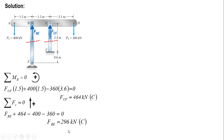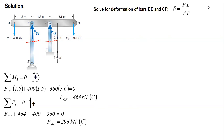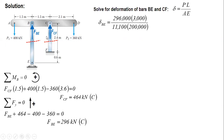From these values, we can compute the shortening or deformation of bars BE and CF using the formula δ = PL / AE. For BE: the force is 296 kN (converted to 296,000 N), the length is 3 m (i.e., 3,000 mm), the area is 11,100 mm², and E for steel is 200,000 MPa. The shortening of BE is 0.4 mm.